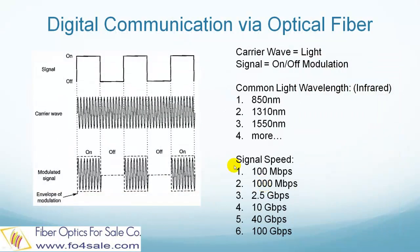This illustration shows the laser modulation process, which turns the laser on and off by an electronic signal. The laser generates stable continuous light. The most common light colors or wavelengths are 850 nm, 1310 nm, 1550 nm, and more. The light itself is the electromagnetic wave, and is called the carrier wave.